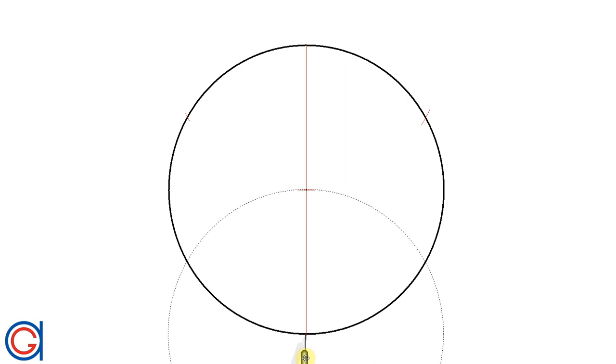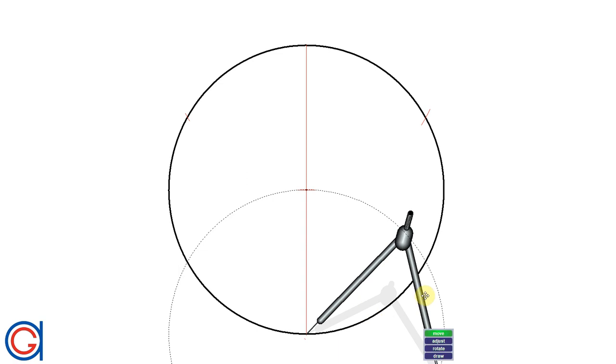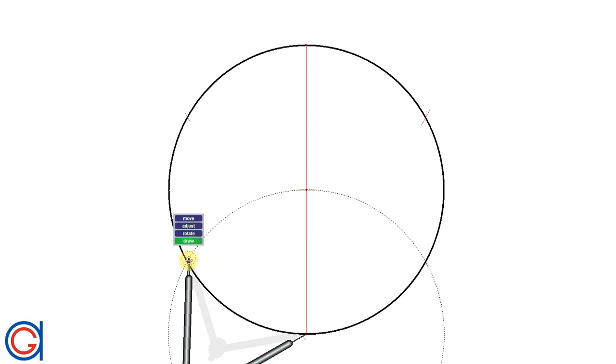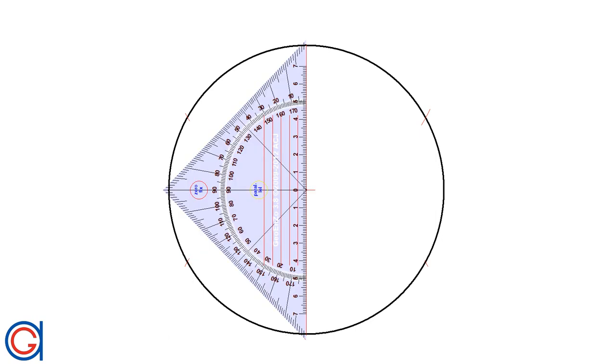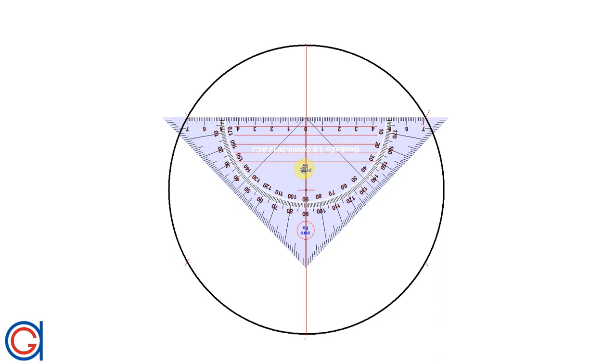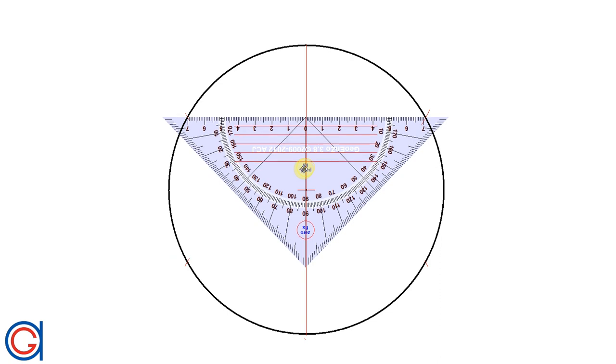Now we repeat this process from the bottom end of the vertical diameter obtaining another two points on the circumference. Setting the ruler between the previously scribed points on the circumference, we obtain two new points on the vertical diameter which you can see here.